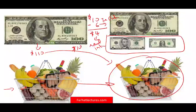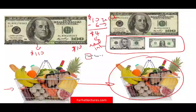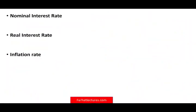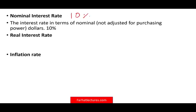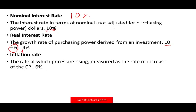So we're going to call the 10, the 6, and the 4 something — they have specific names. To approximate, the real rate is approximately equal to the nominal rate minus inflation. The nominal rate is what the bank gave you — 10% for our example, not adjusting for purchasing power. The real interest rate is the growth rate of purchasing power derived from the investment. Although you earned $10, $6 was eaten by inflation because the basket of food went up by $6, or 6%. What's left is 4%. The inflation rate is the rate at which prices are rising, measured as the rate of increase of the CPI — consumer price index. For our purposes, CPI went up 6%. So: nominal rate 10%, real rate 4%, inflation rate 6%.